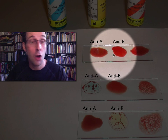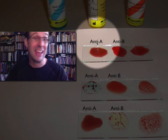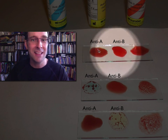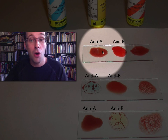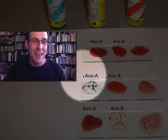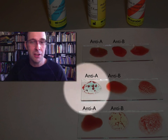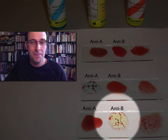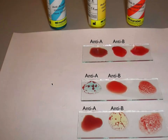This person here must have O-type blood, because neither of the antibodies — neither anti-A nor anti-B — stuck onto those blood cells, showing that they don't have the A-antigen or the B-antigen, so they must have O-type blood. If we had a person who had AB-type blood, then we'd expect to see agglutination both with the A and the B antibodies.